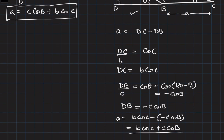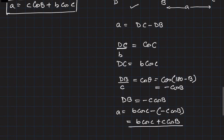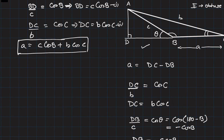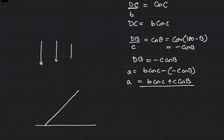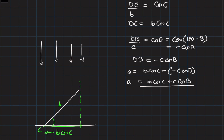This is called the projection formula because we are using the concept of projection. Imagine a floor and a linear object like a pen. If you shine light from the top, the shadow of side b (with angle C at one end) would be of length b·cos C. That shadow length is the projection of side CA onto the baseline.